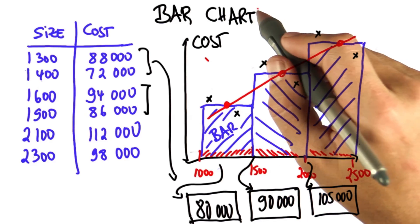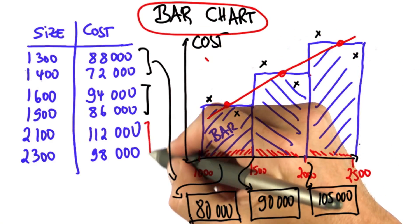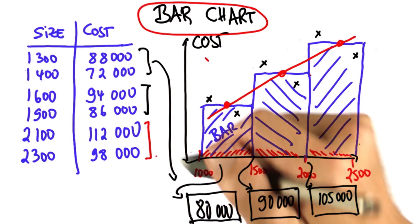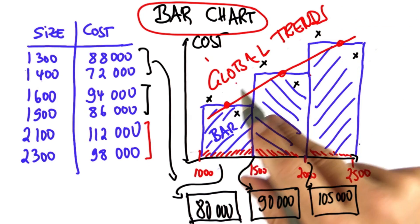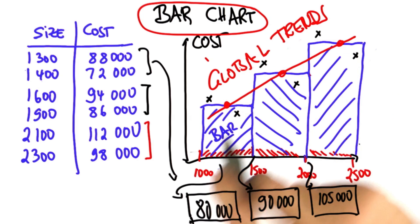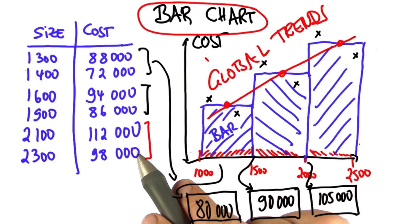So what the bar chart does is help you pool together groups of data into a single bar and understand global trends. Such global trends might not be that important if you only have six data points, but imagine you have 60,000.